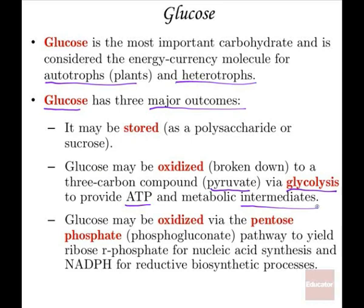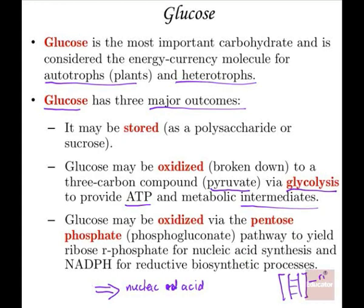Glucose can also be oxidized by the pentose phosphate pathway — that's the pathway that produces the nucleic acids. During our discussion about DNA and RNA, recall that the backbone of the DNA molecule, like a ladder, consists of ribose sugar molecules. In order to produce those molecules, we need to go through this pentose phosphate pathway.